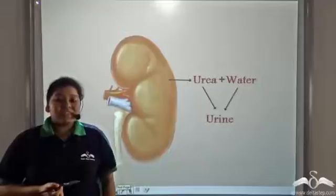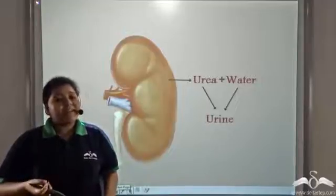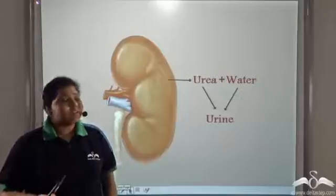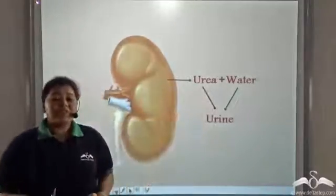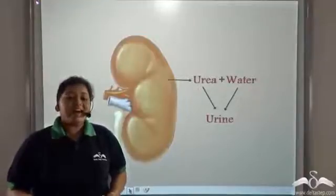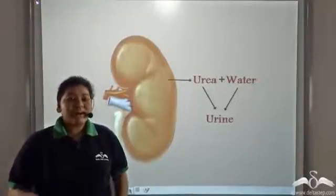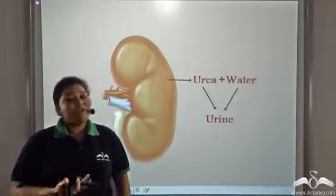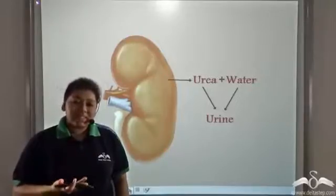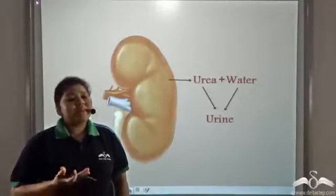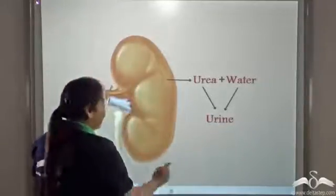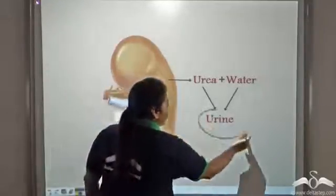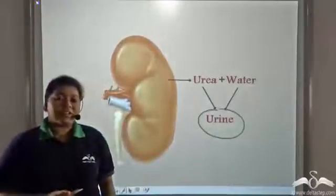The kidney purifies the blood and takes out all the nitrogenous waste products such as urea. Together with water, which acts like a liquid medium to flush out all the toxic products, it forms a liquid known as urine. This urine is then eliminated from our body.